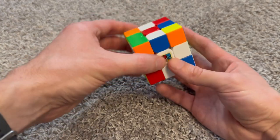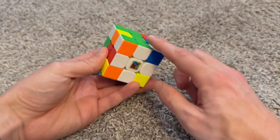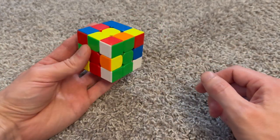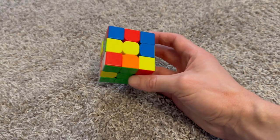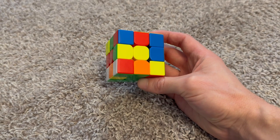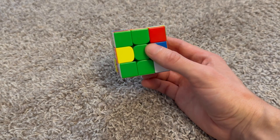So of course, first step here, I'm going to do my cross, white cross, that's how I learned. Unfortunately, it never became color neutral as a result, although now I can do yellow cross first without too much trouble.